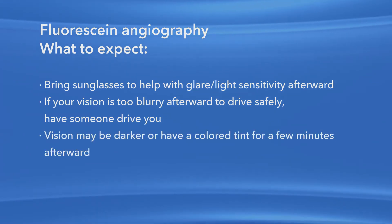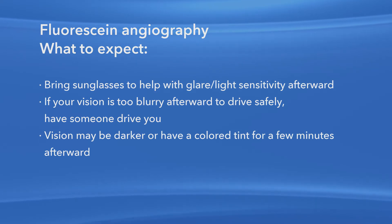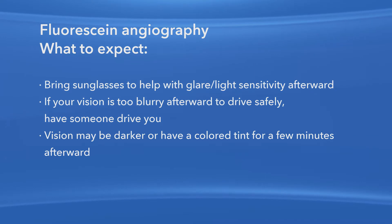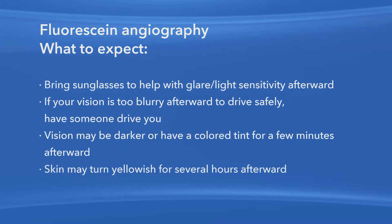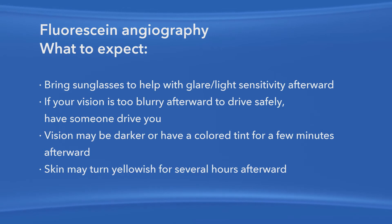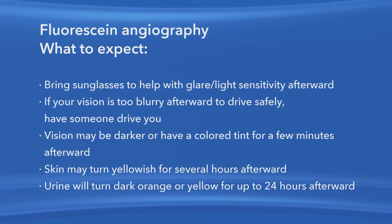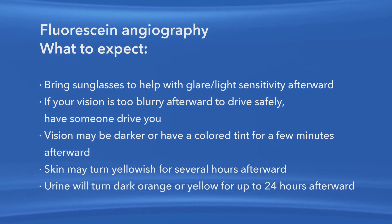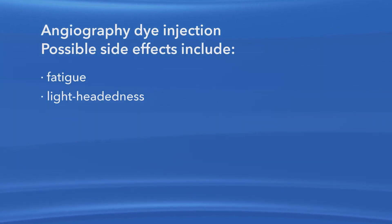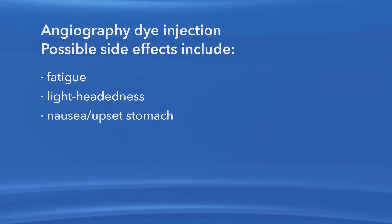Your vision may appear darker or have a colored tint after the procedure. This will last only a few minutes. After the fluorescein dye is injected, your skin may turn yellowish for several hours. Also, because your kidneys remove the dye from your body, your urine will turn dark orange or yellow for up to 24 hours following the test. Some people may feel tired, lightheaded, or nauseous after having the dye injected.